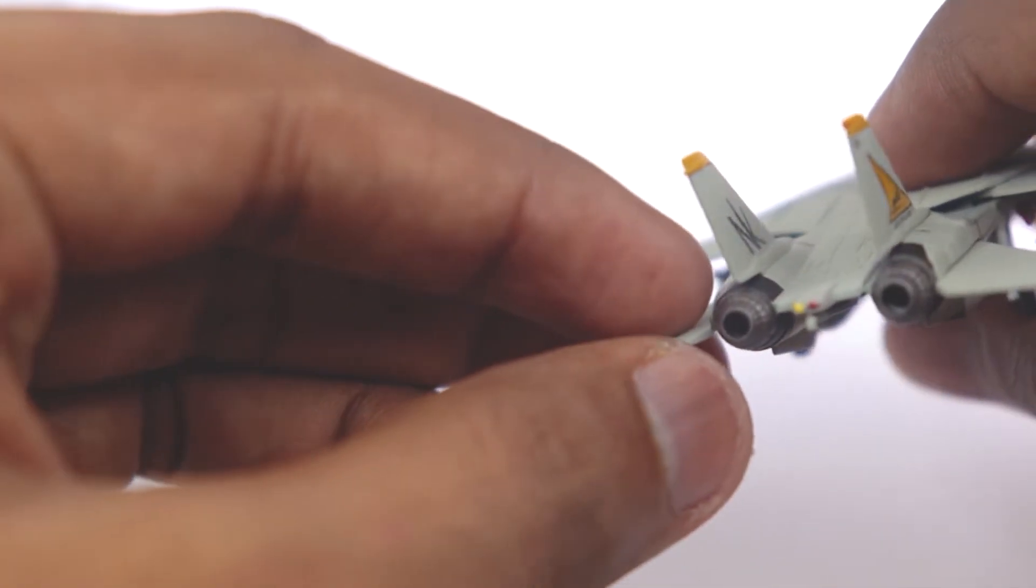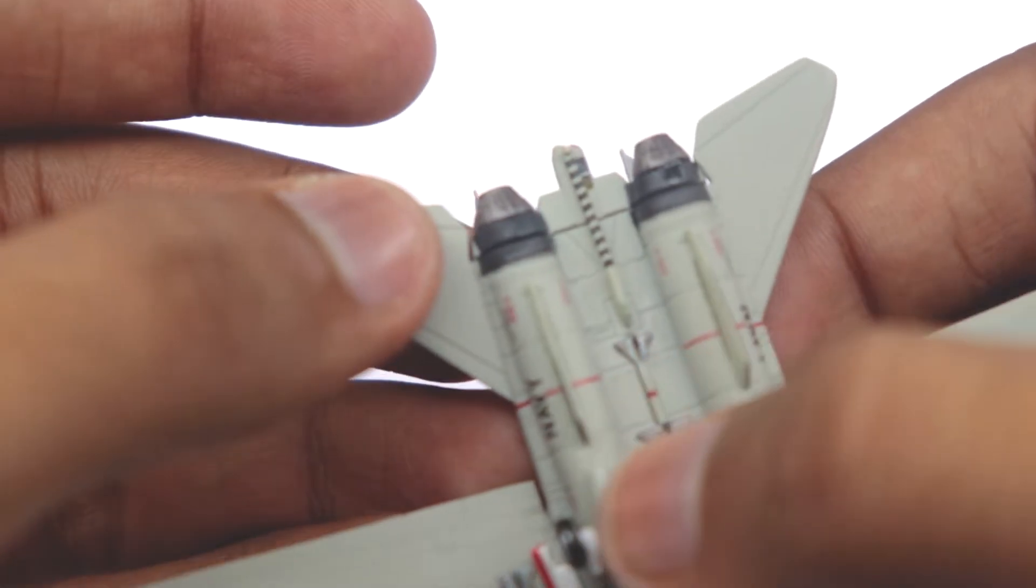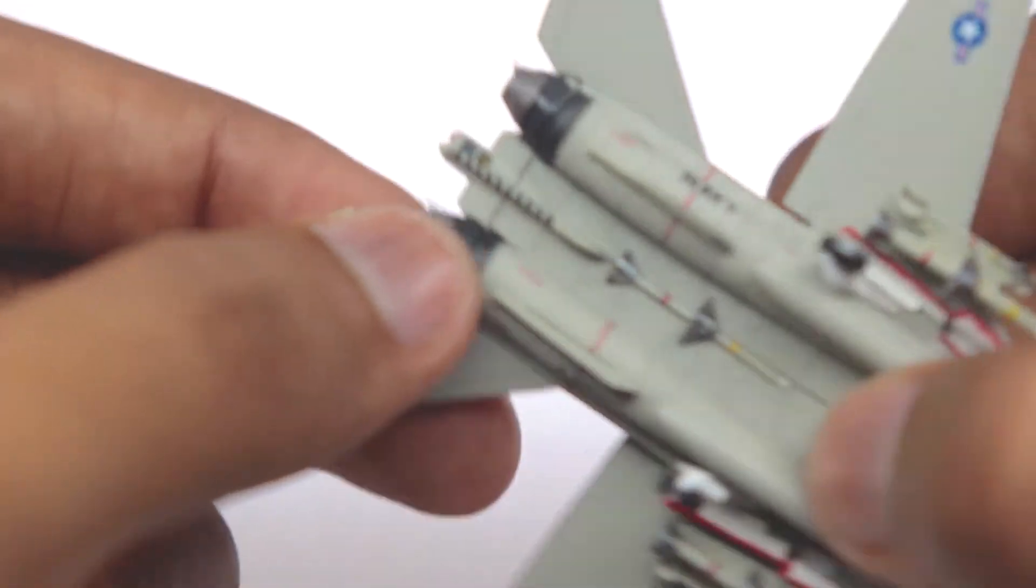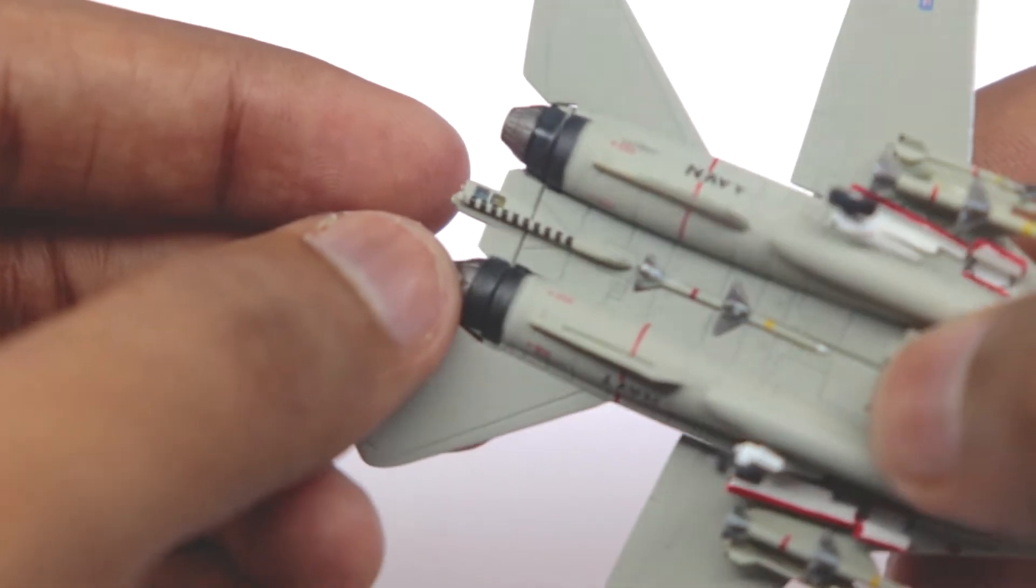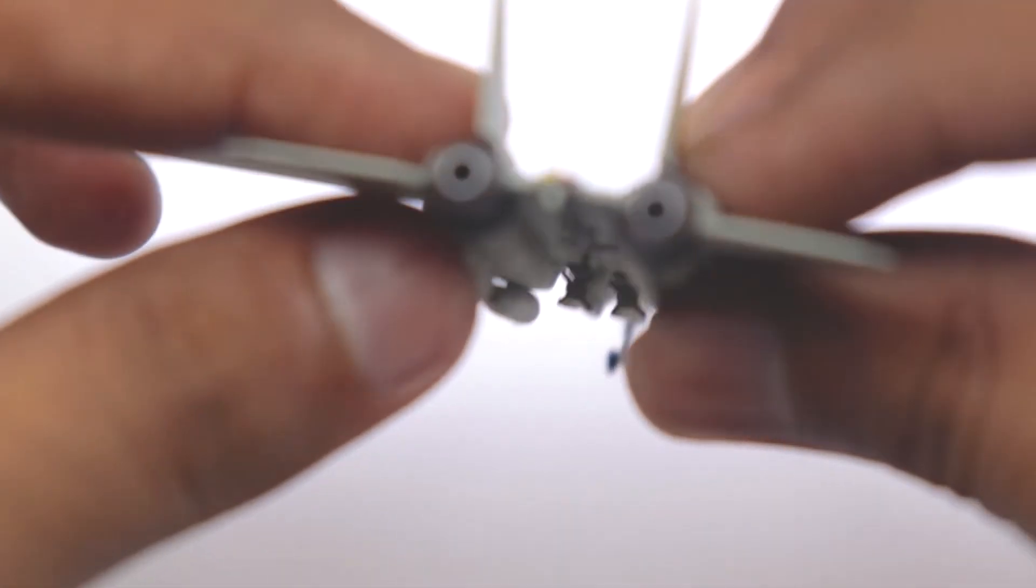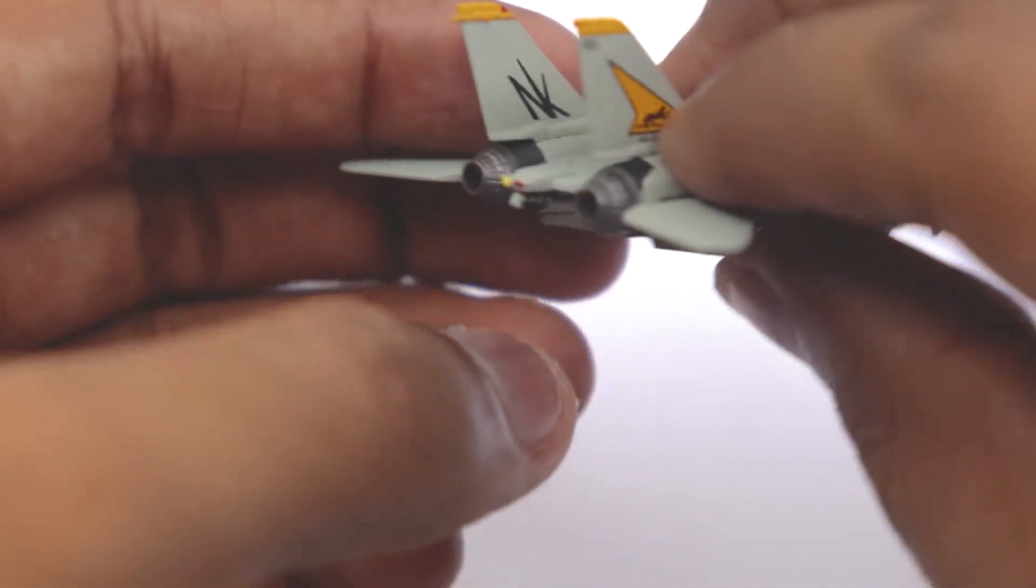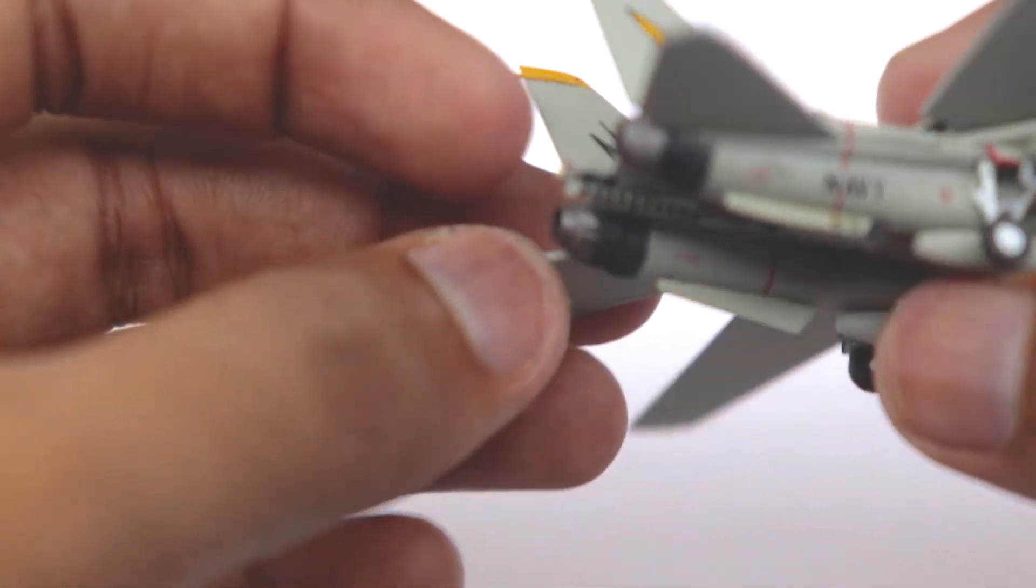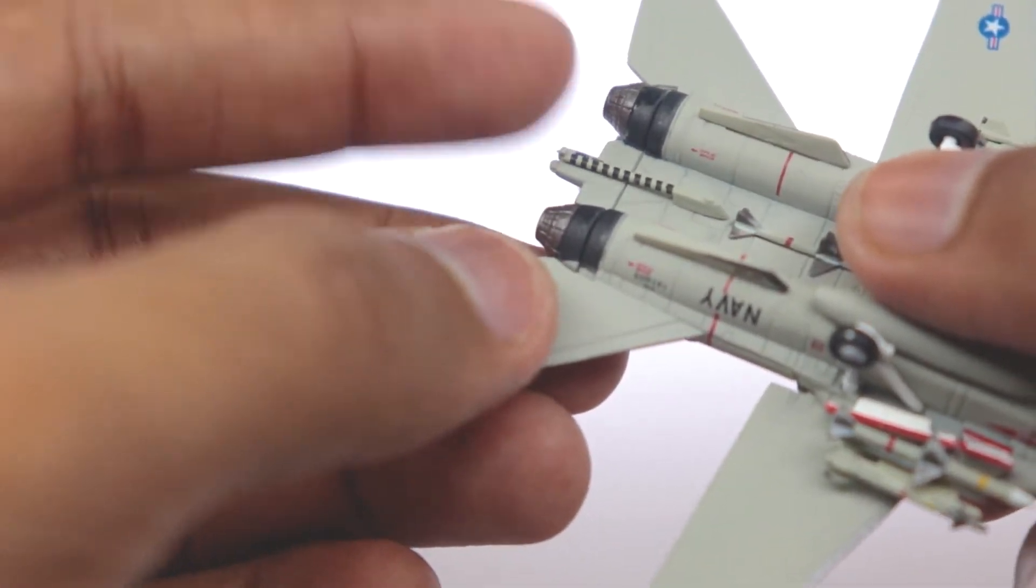Then if we look at the back we have two engine nozzles and here I think the Hogan Wings have an advantage over Herpa. Their nozzles are not that detailed compared to Hogan Wings and these nozzles look pretty good I think in my opinion. I don't know some people may think that the Herpa Wings have more detailed nozzles so it's up to them and at the back we also have the tail hook.